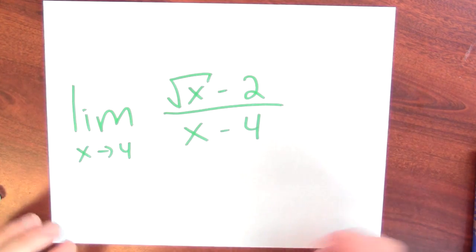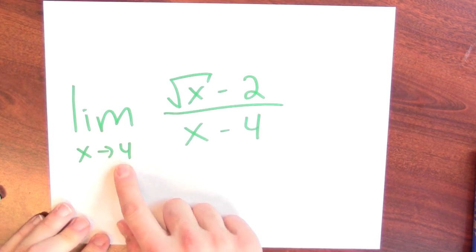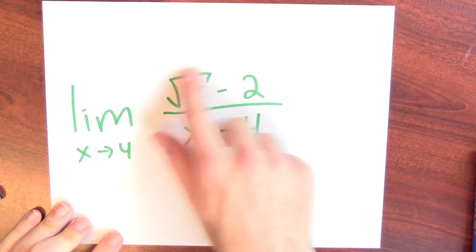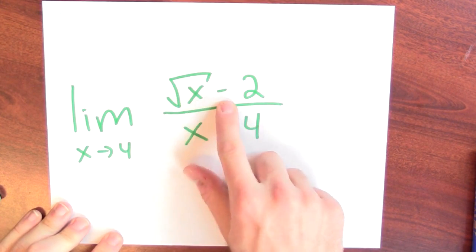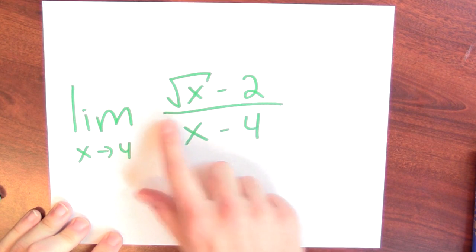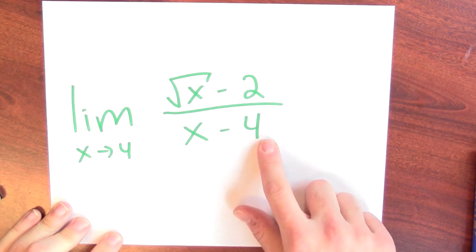There are plenty of limits that are really quite hard to evaluate. Here's an example: take the limit as x approaches 4 of the square root of x minus 2 divided by x minus 4. Admittedly, that limit's not really that difficult to calculate. The limit is 1/4.